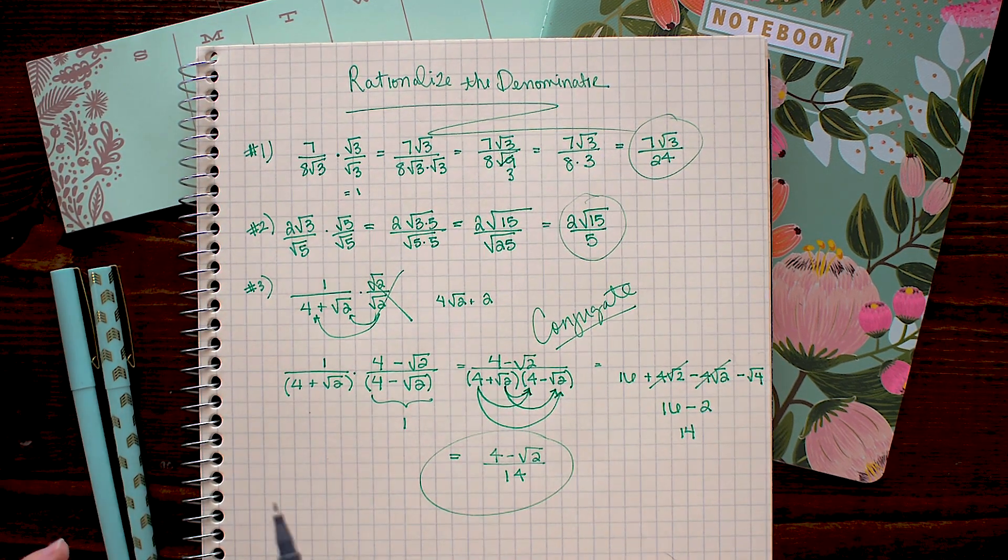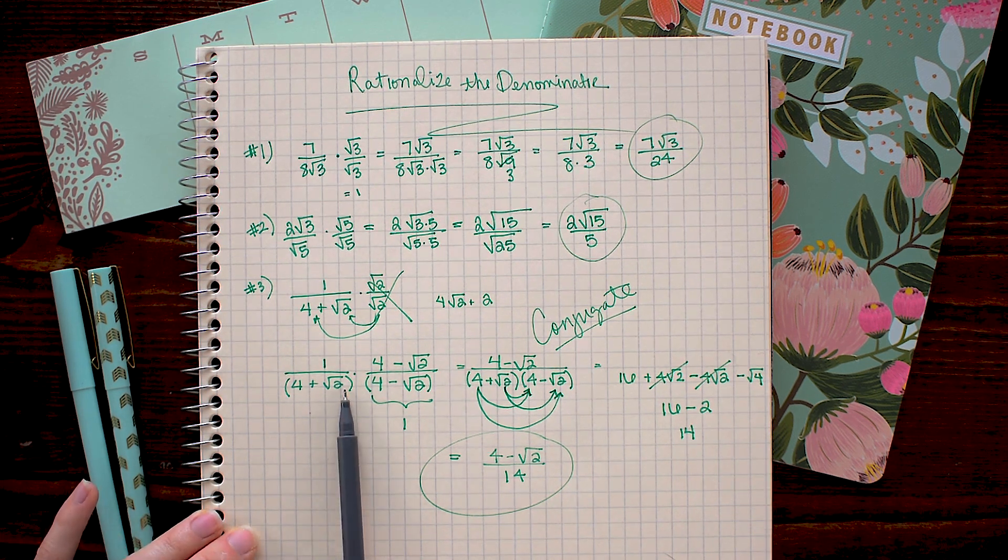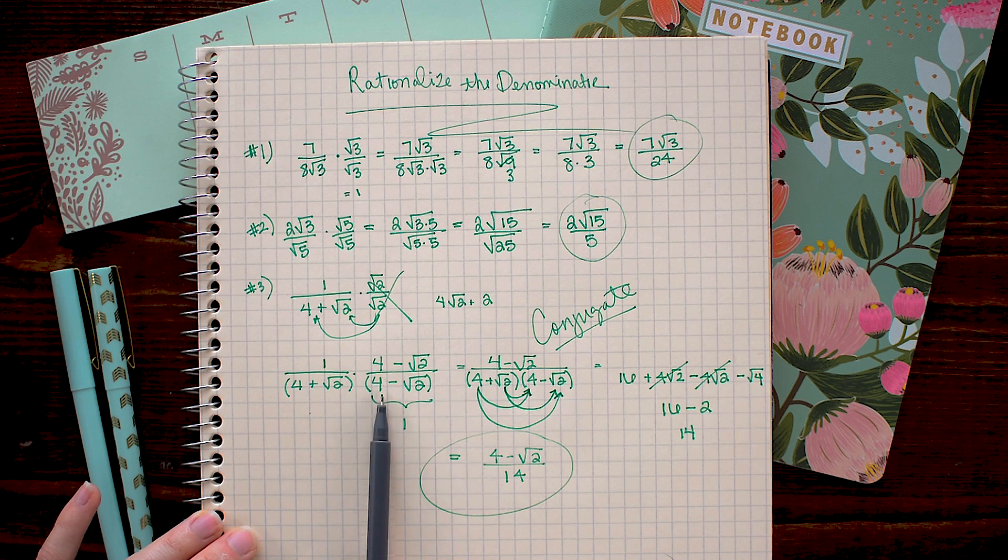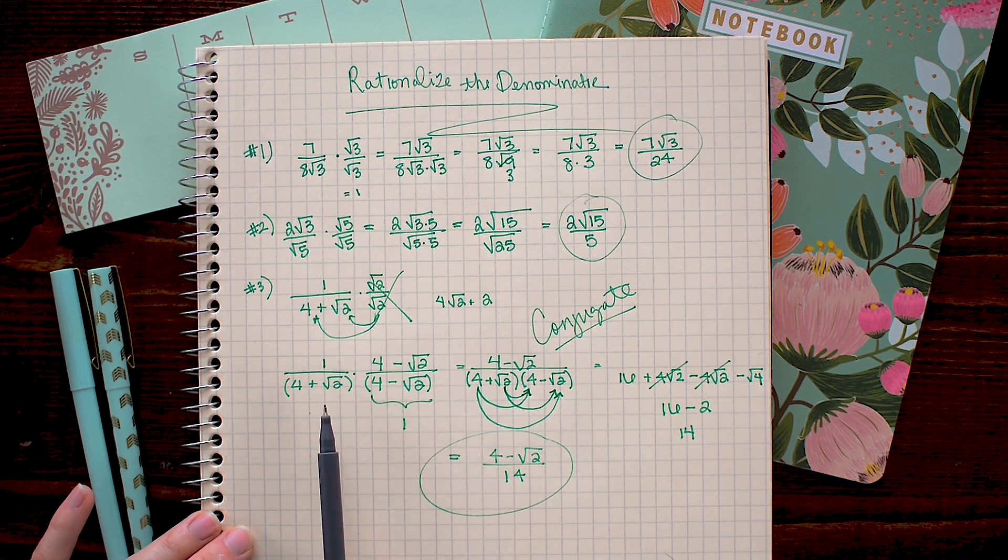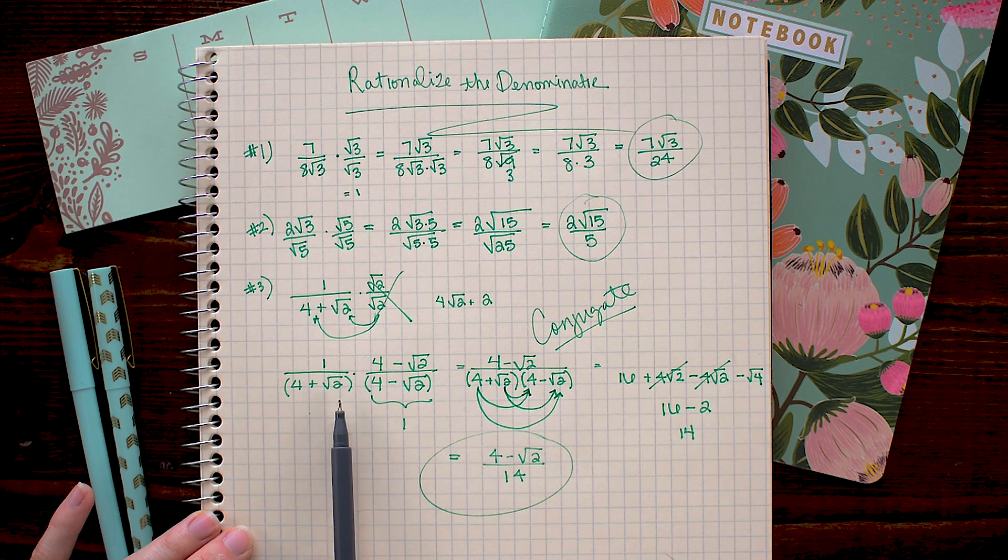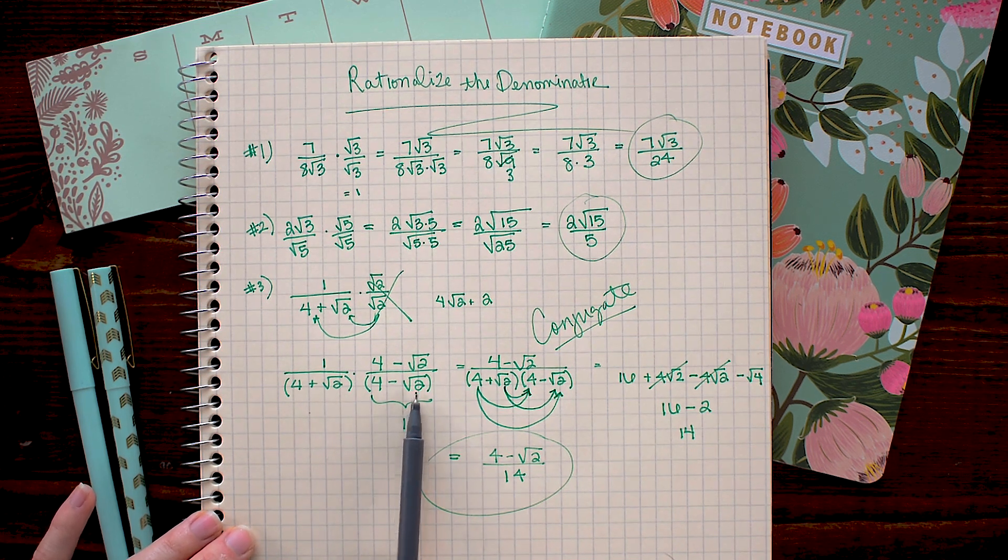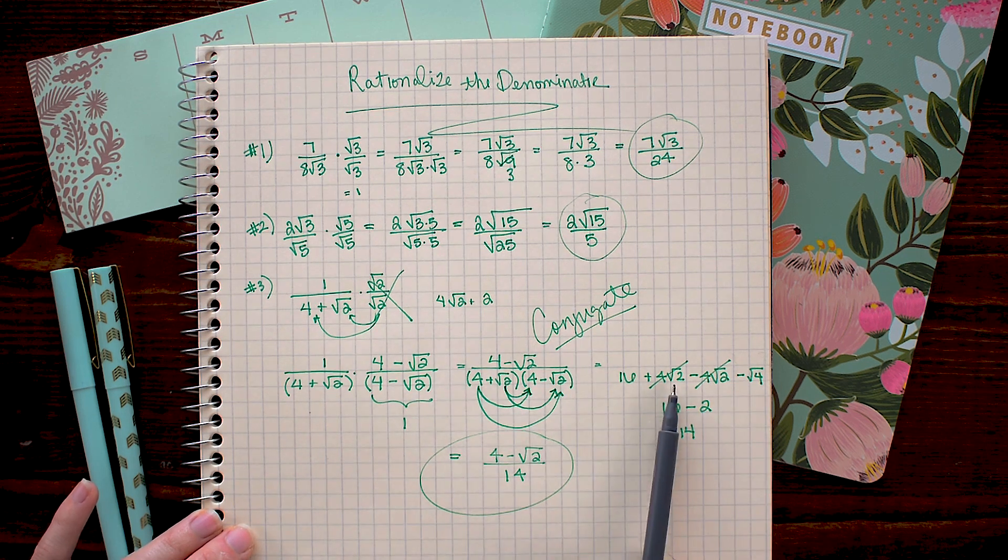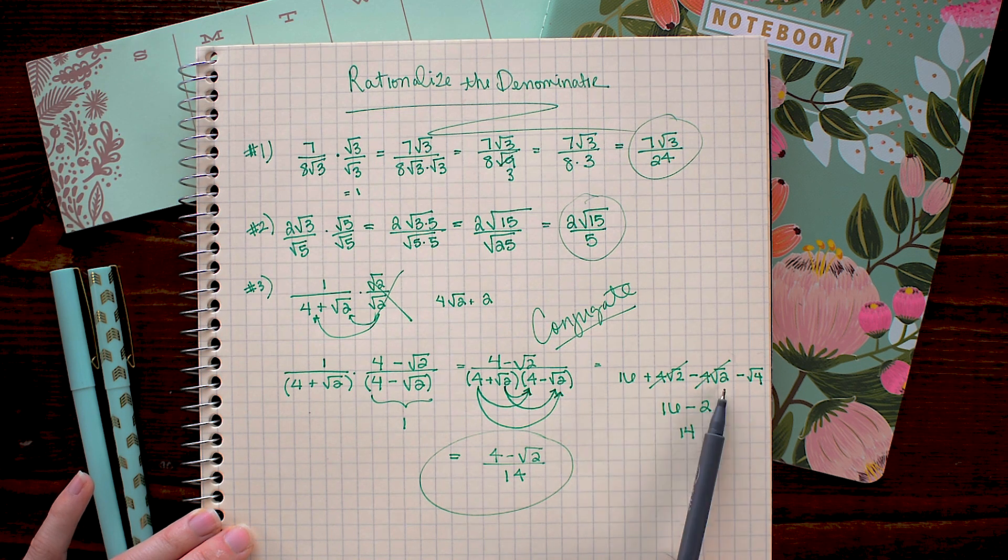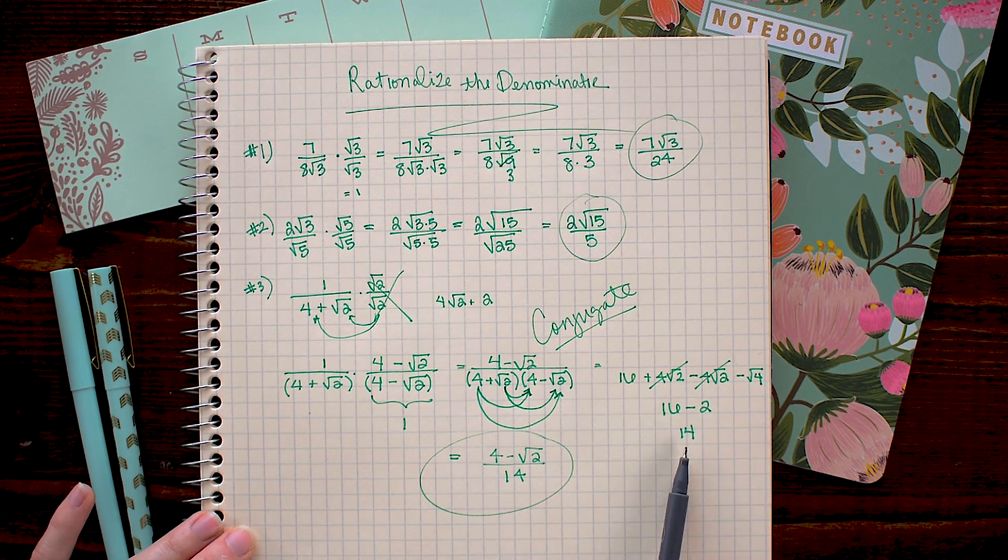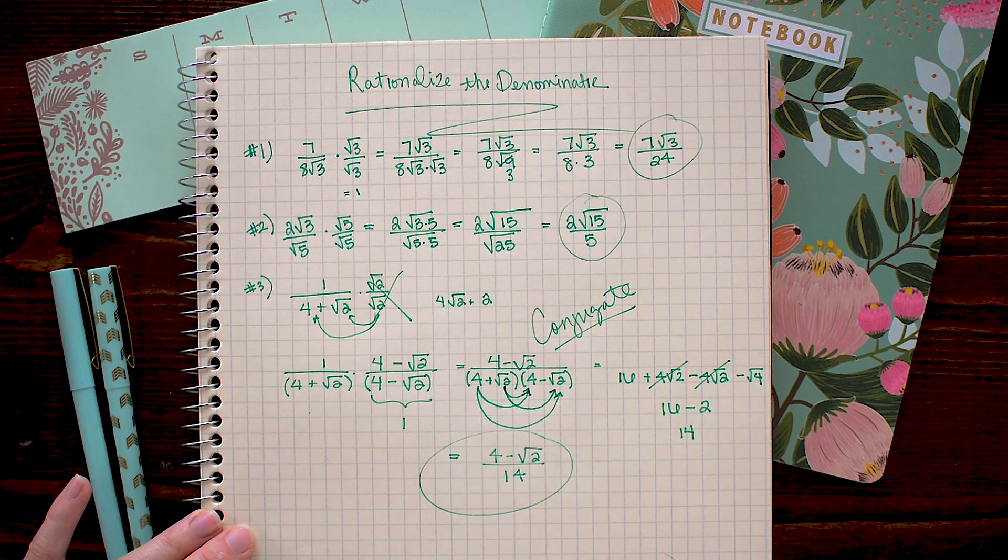So to recap, whenever you have a binomial and you're trying to rationalize the denominator, you must multiply by the conjugate of the denominator over itself. So in this problem, we multiplied 4 plus square root 2 by 4 minus square root 2. And when we FOIL that out, we noticed that anything that had square root 2's remaining in it canceled out, and we were left with only whole numbers, instead moving our square root part up into the numerator.